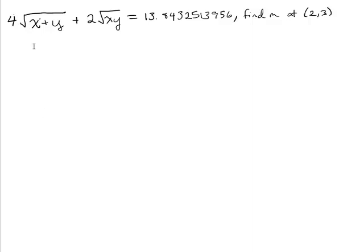In this video, we're going to find the slope of the tangent line of the implicitly defined curve 4√(x+y) + 2√(xy) = 13.8432513956 at the point (2,3).